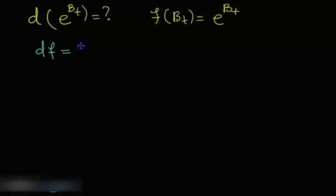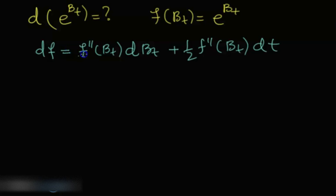of a twice differentiable function is equal to the first derivative computed at Brownian dB_t plus one half the second derivative of the function at Brownian dt. So we need the first derivative and second derivative.